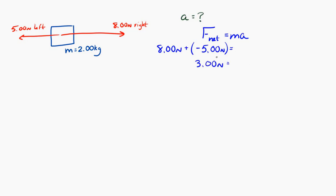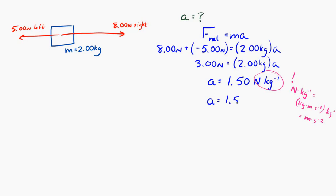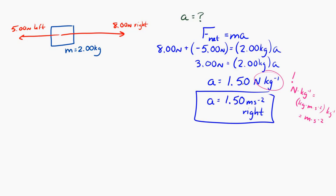Solving for the acceleration, I get positive 1.50 Newtons per kilogram. It turns out that Newton per kilogram is the same as meter per second squared. Since I got a positive acceleration, and positive means to the right, my acceleration is 1.50 meters per second squared to the right.